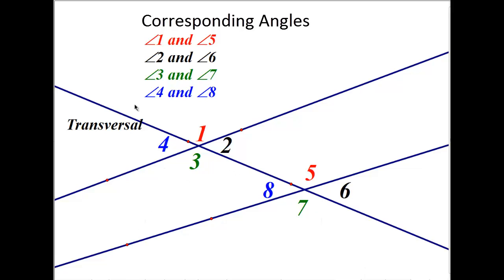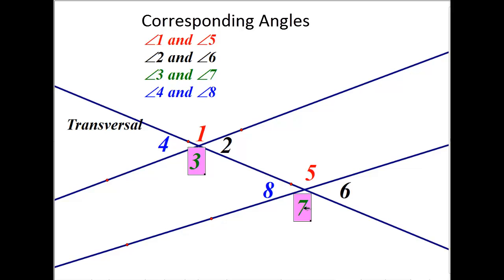You need to understand the terminology so that when we show you angles, you can pick out corresponding angles and other related terms. Corresponding angles lie on the same side of the transversal and to the same side of the lines. For example, angles one and five are both to the right of the transversal and above the lines, so they are a pair of corresponding angles. Similarly, three and seven are corresponding because they are below the line and to the left of the transversal.